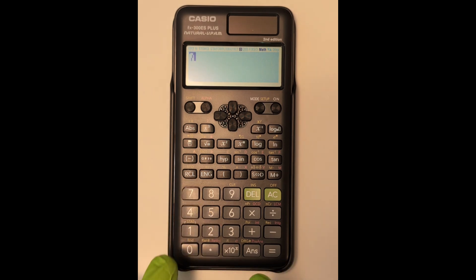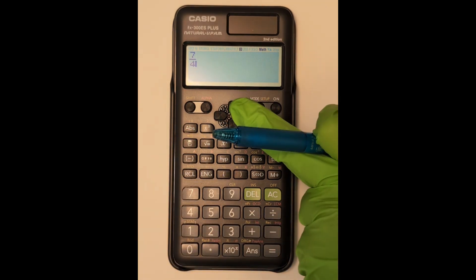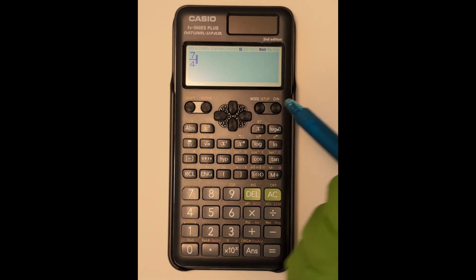To use this we simply type the numerator, hit the fraction key, then the denominator. This probably is the easiest way to use the button.